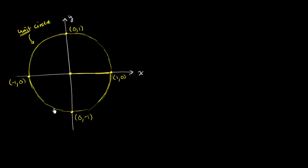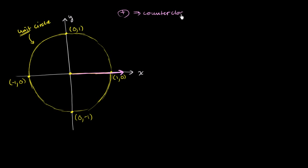Now with that out of the way, I'm going to draw an angle. I'm going to define a convention for positive angles. The initial side of an angle we're always going to place along the positive x-axis — that's the starting side of the angle. To draw a positive angle, the terminal side moves in a counterclockwise direction. So positive angle means counterclockwise, and a negative angle would move in a clockwise direction.